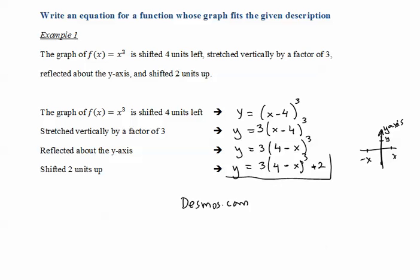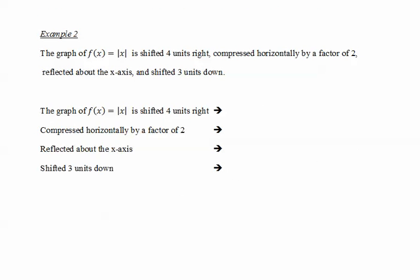Now we have the graph of f(x) = |x|, which has a V-shape. We need to shift it four units to the right, compress it horizontally by a factor of two, reflect it about the x-axis, and then shift it three units down. The goal is to find the equation. Shifting four units to the right gives us y = |x - 4|.